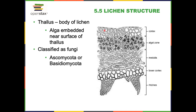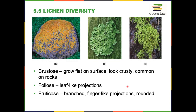Lichen are classified according to their growth form. Crustose lichen grow flat on the surface — crusty — and are very common on rocks. Foliose have leaf-like projections — common around here, often seen on fences. Fruticose lichen have branch-finger-like projections that look kind of like moss, but they're not — they're this combination of fungus and algae, whereas moss is a plant. Lichen are slow growing because they're not competing with anything else.